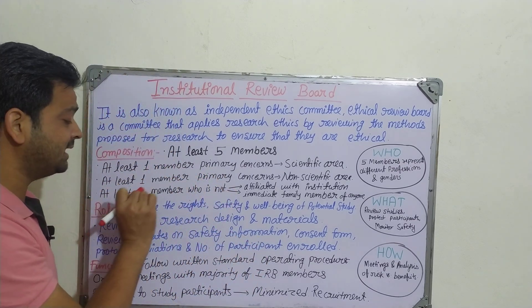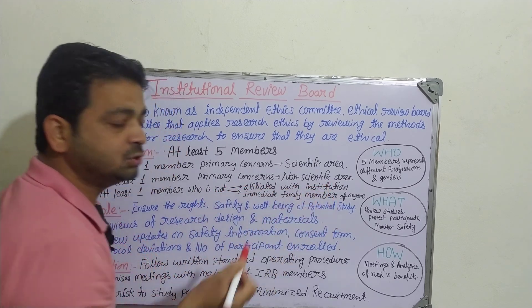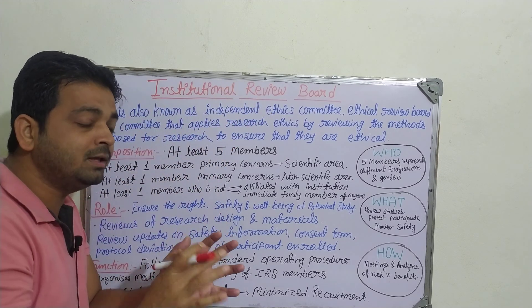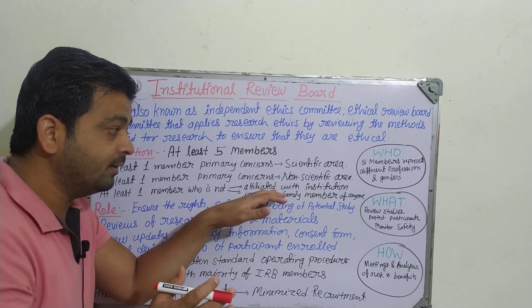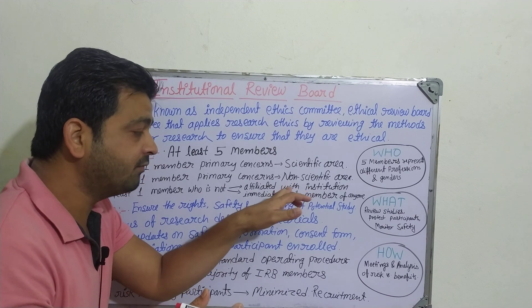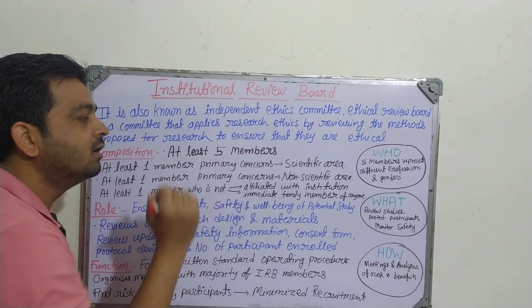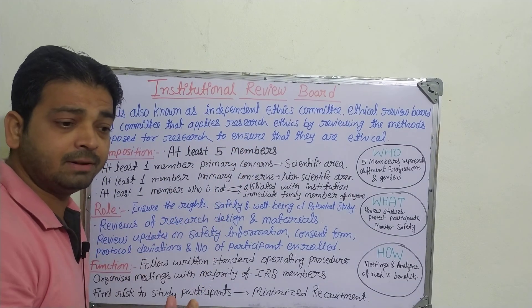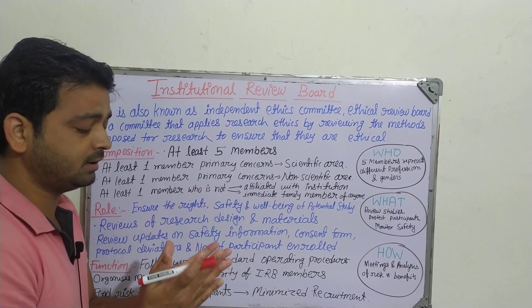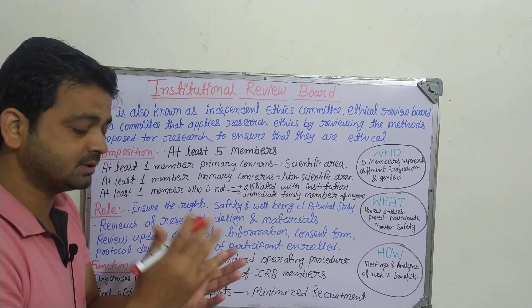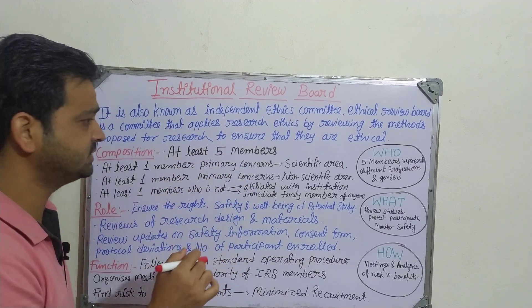At least one member should not be affiliated with the institution. When the board is assigned to review a clinical trial protocol, one person should not be affiliated with the institution or be an immediate family member — cousin, brother, sister — of any of the other members. Additionally, there should be gender variation; both male and female members should be present among the five, not all male or all female.